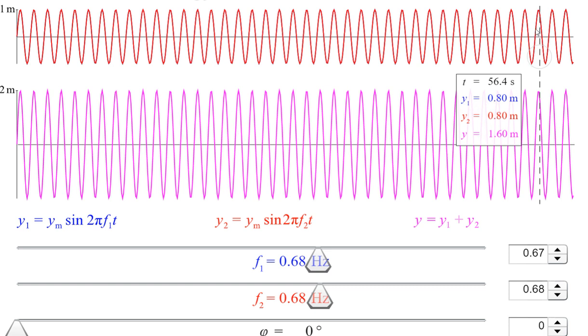For example, at some particular position, displacement of one wave is 0.80, the other wave is 0.80 also. So there is no phase difference, both are of same frequencies. So the maximum resultant is 1.60.